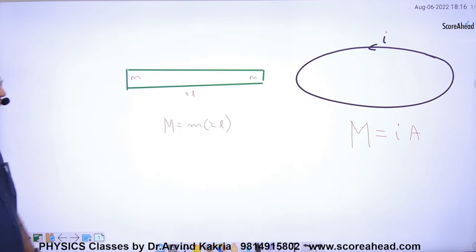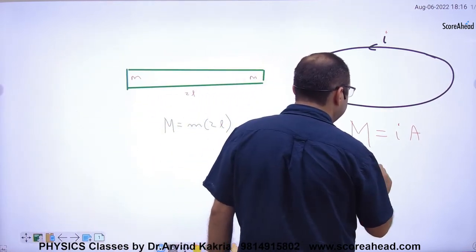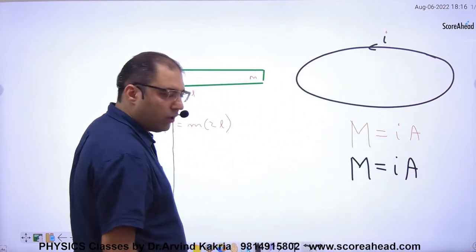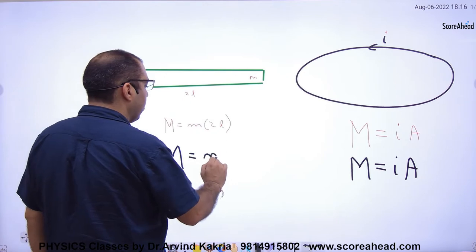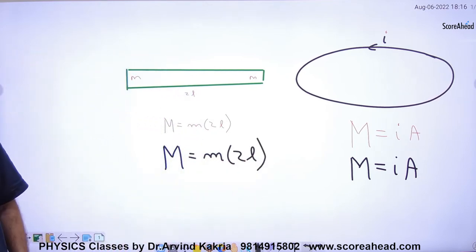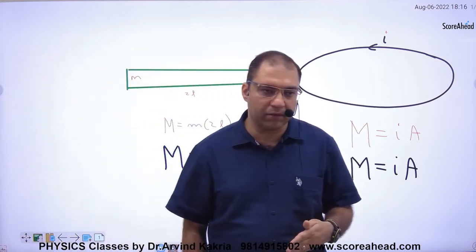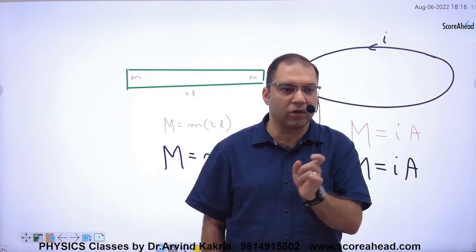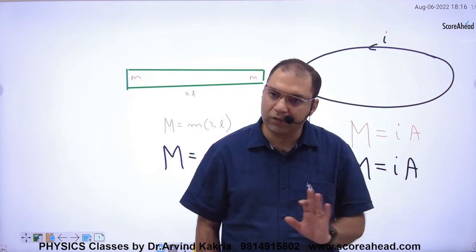So to recap: for a current-carrying loop, capital M equals current into area. And capital M's formula for a bar magnet is small m into 2l. So now questions come in two categories — from a current-carrying loop or from a bar magnet — and we apply the appropriate formula.